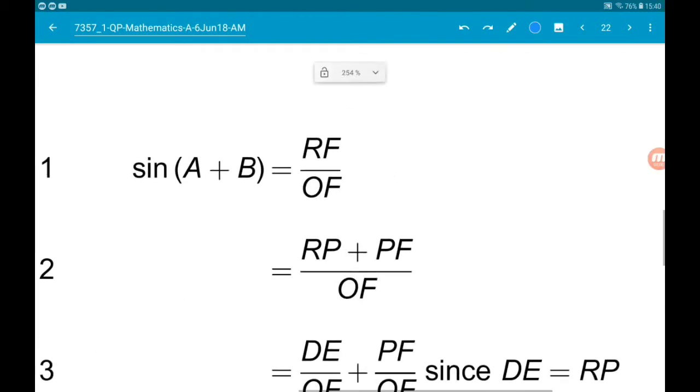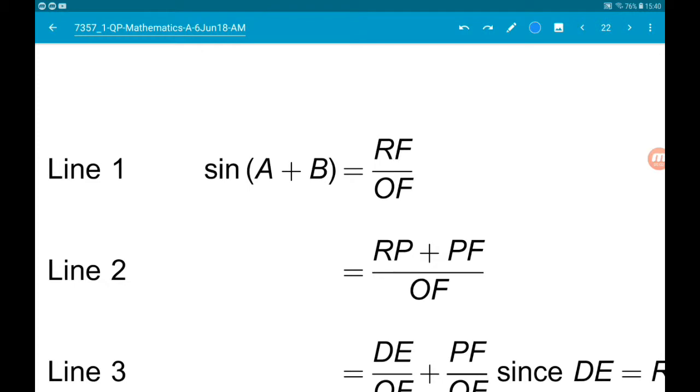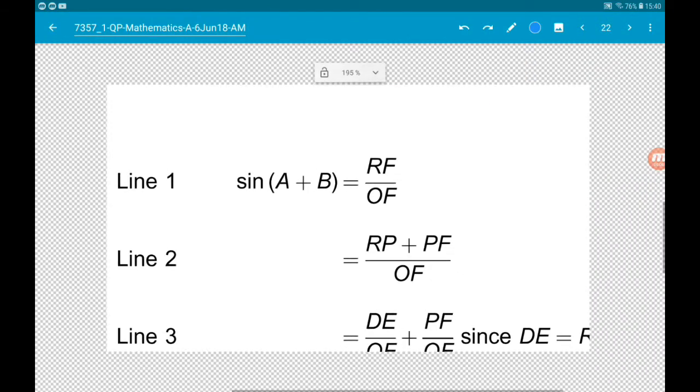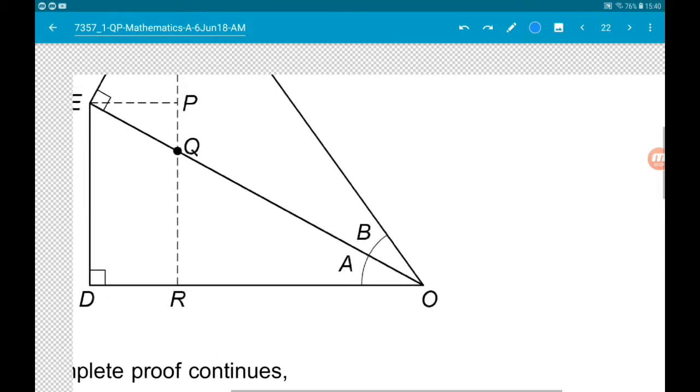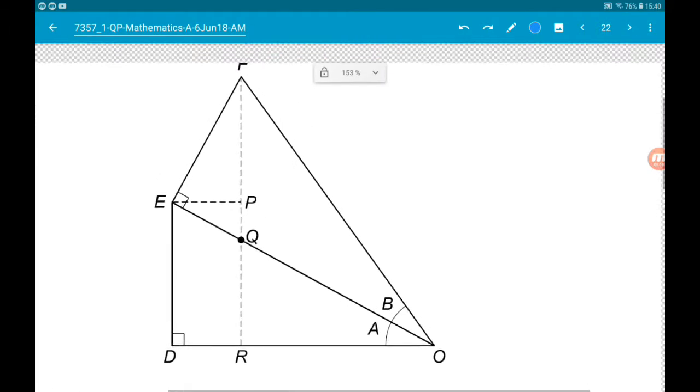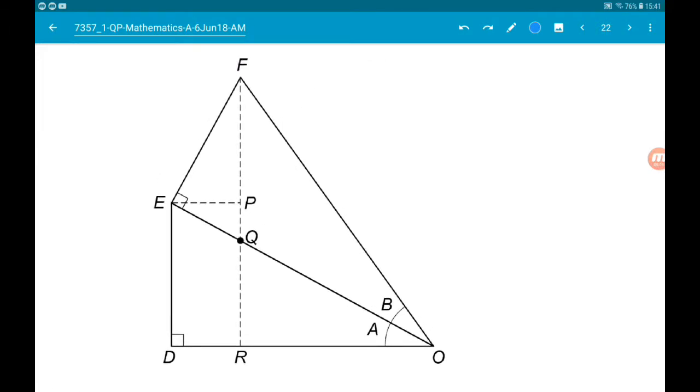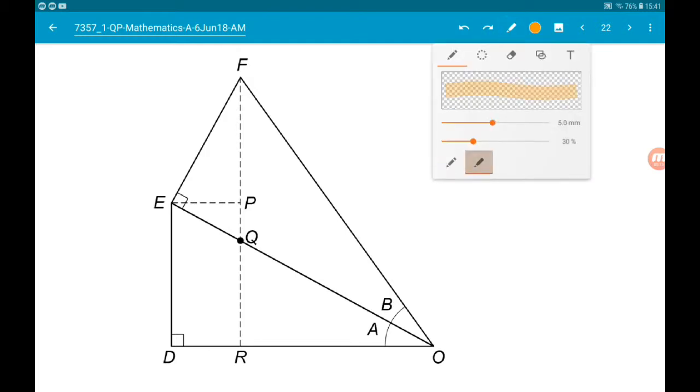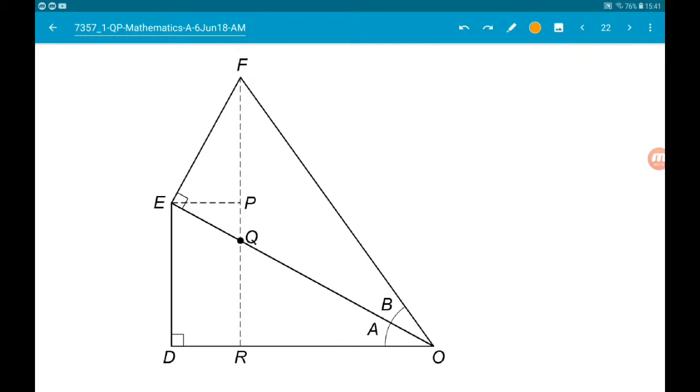Okay, then line 1. They are saying that sin of A plus B is RF over OF. So RF is this vertical height here. So that would be the opposite to angle A plus B. And then OF is the hypotenuse. So that is absolutely correct.